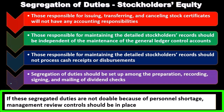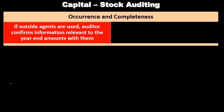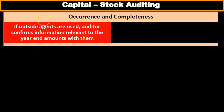The segregation of duties are too heavy — too many segregations for that particular organization to handle. Now we're going to consider the auditing of capital stock and take a look at the assertion of occurrence and completeness.